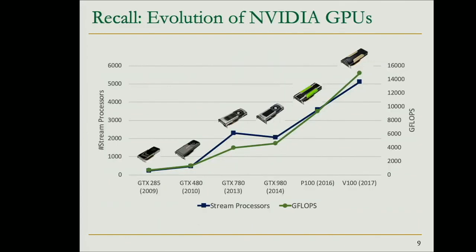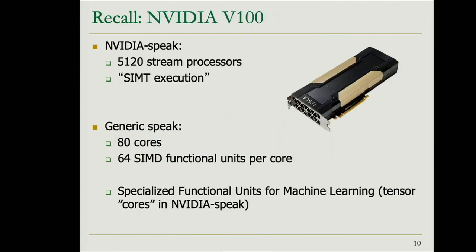Over the last 10 years, you can see how much the number of stream processors and, more importantly, the peak throughput has increased — something like 30 times. From the GTX 285 to the NVIDIA Volta V100, released in 2017 and especially designed for training deep neural networks, the number of stream processors went from 240 to 5,120. The organization is also different: the V100 has 80 cores with 64 CUDA cores per core.